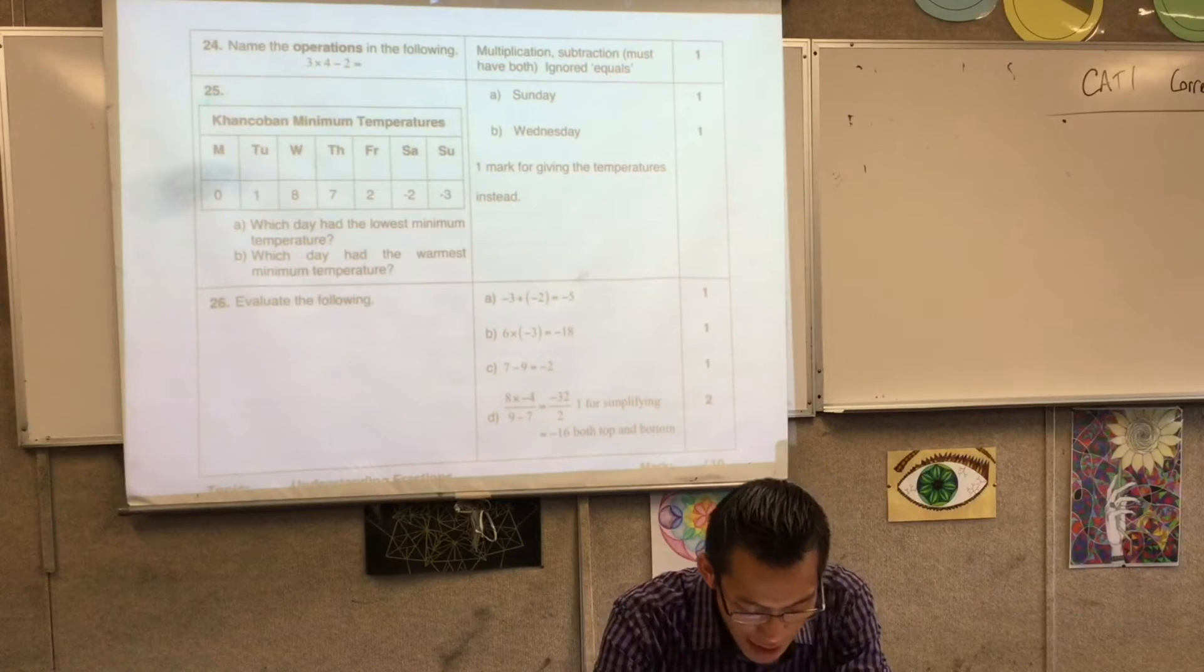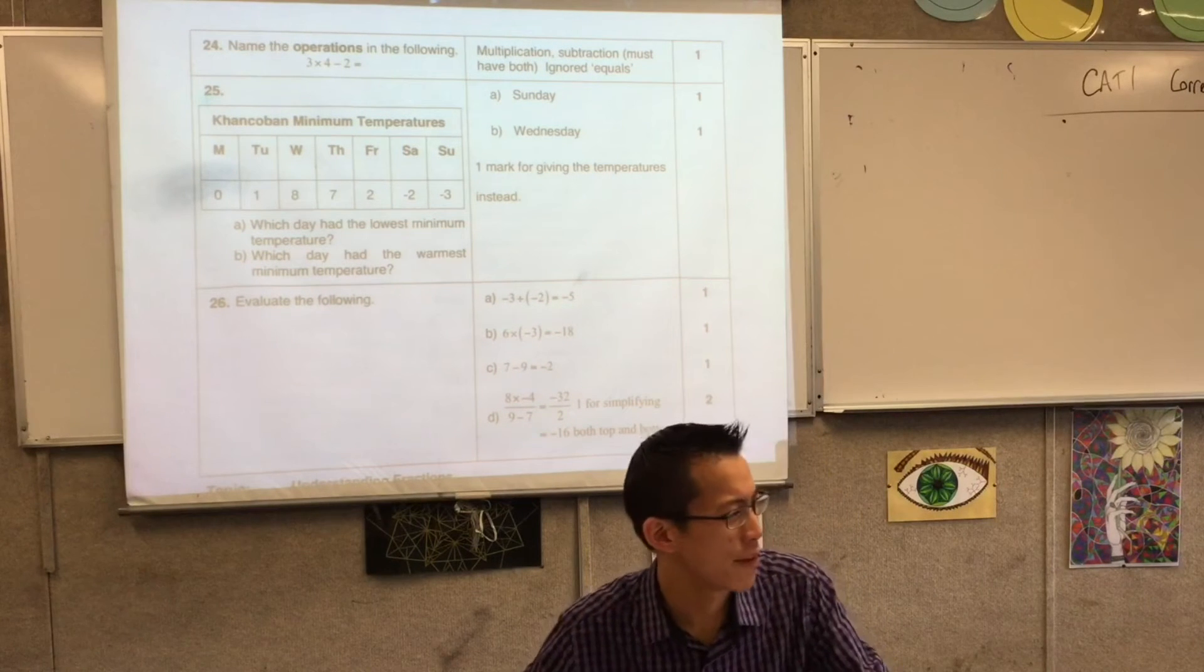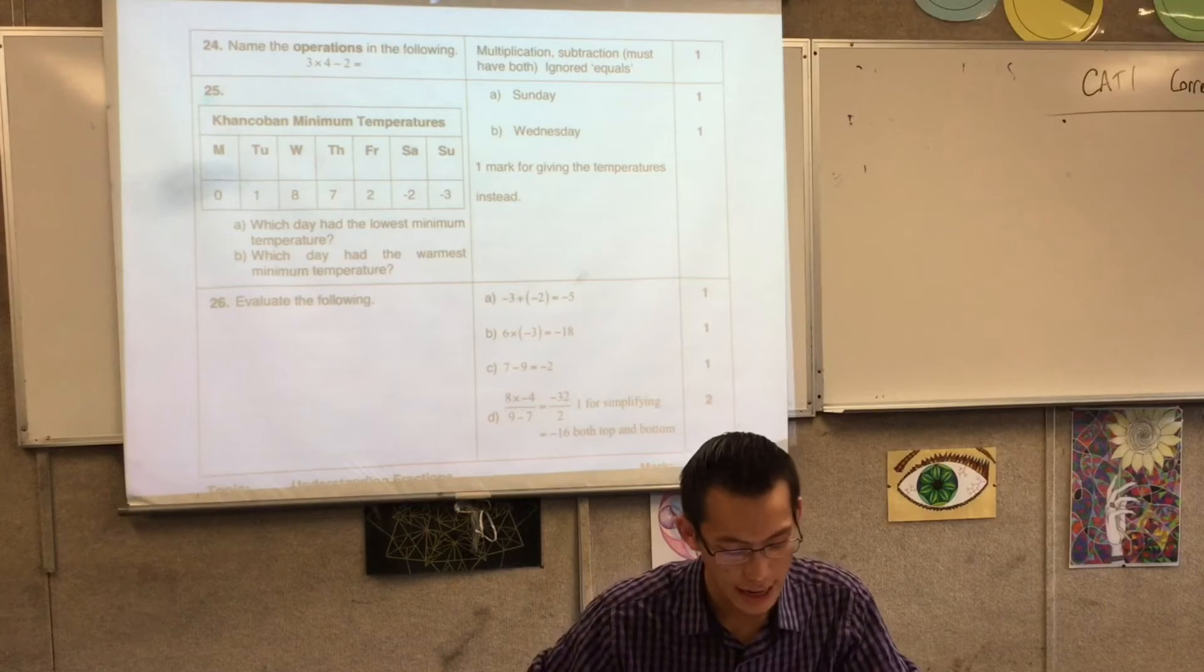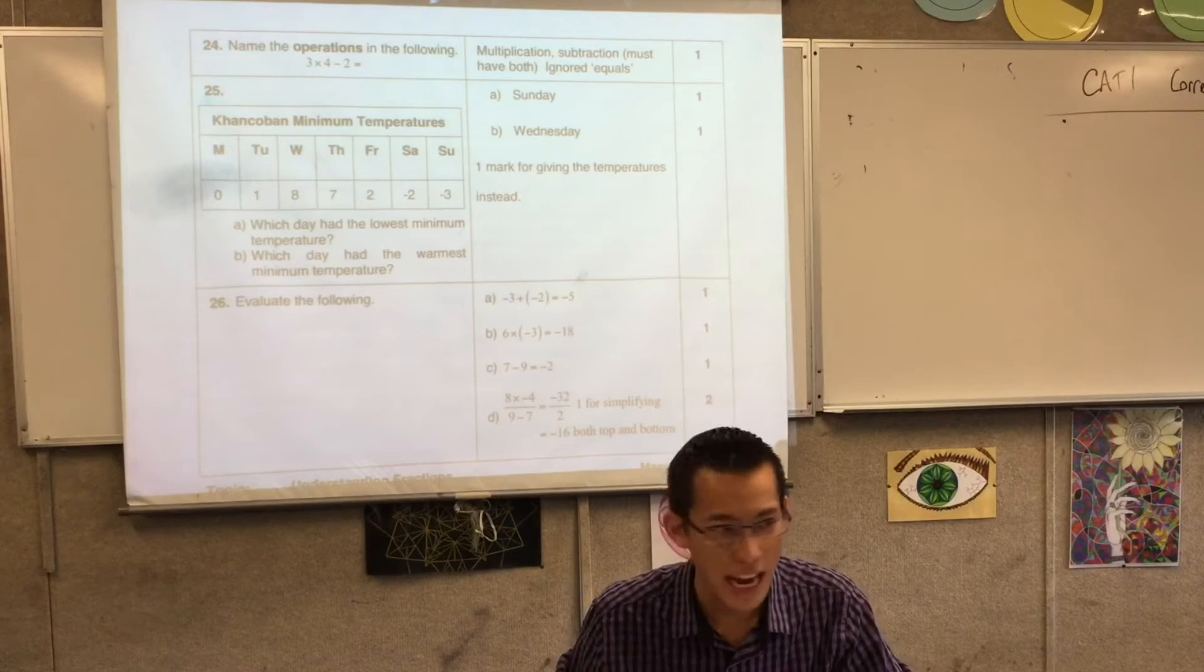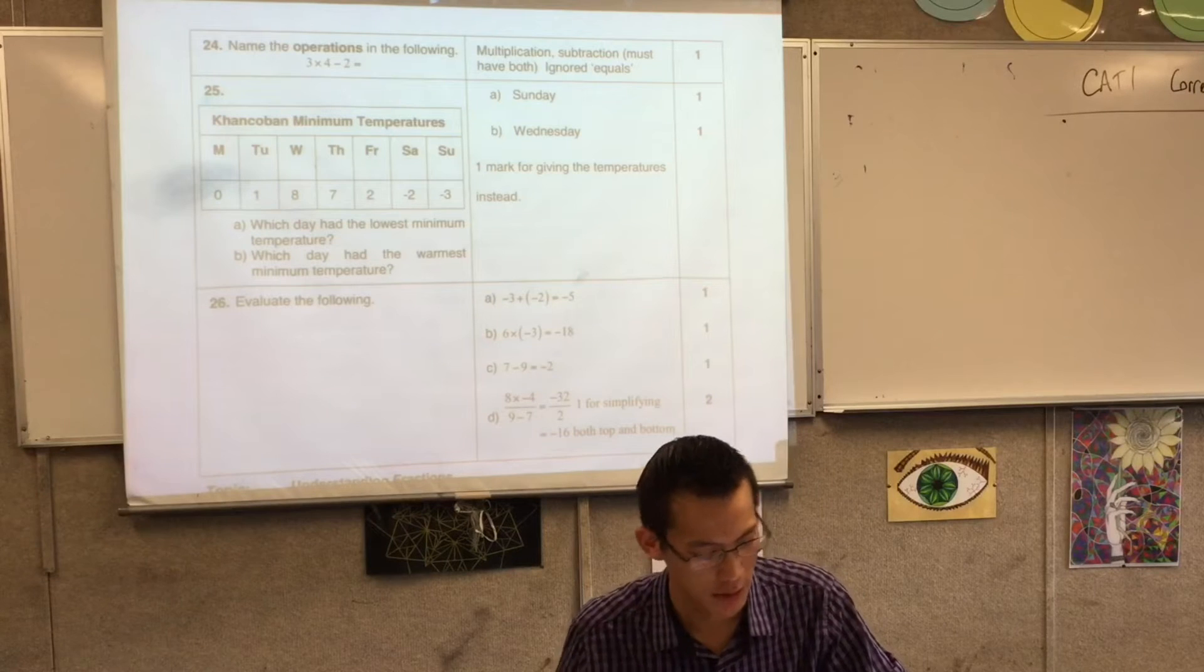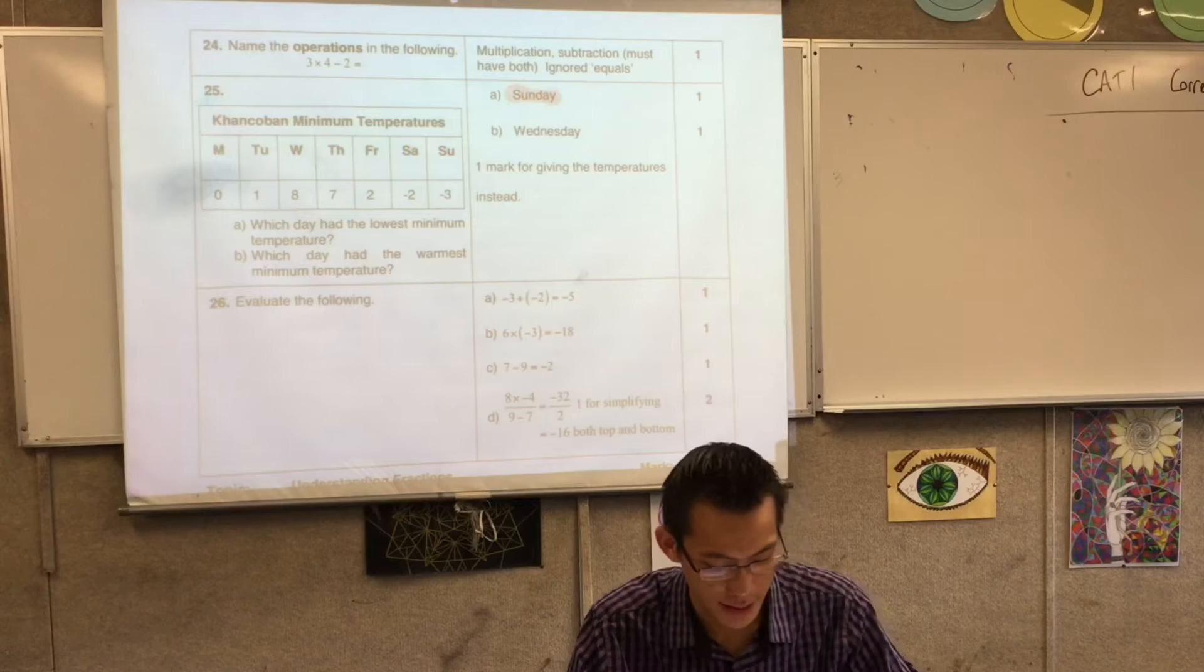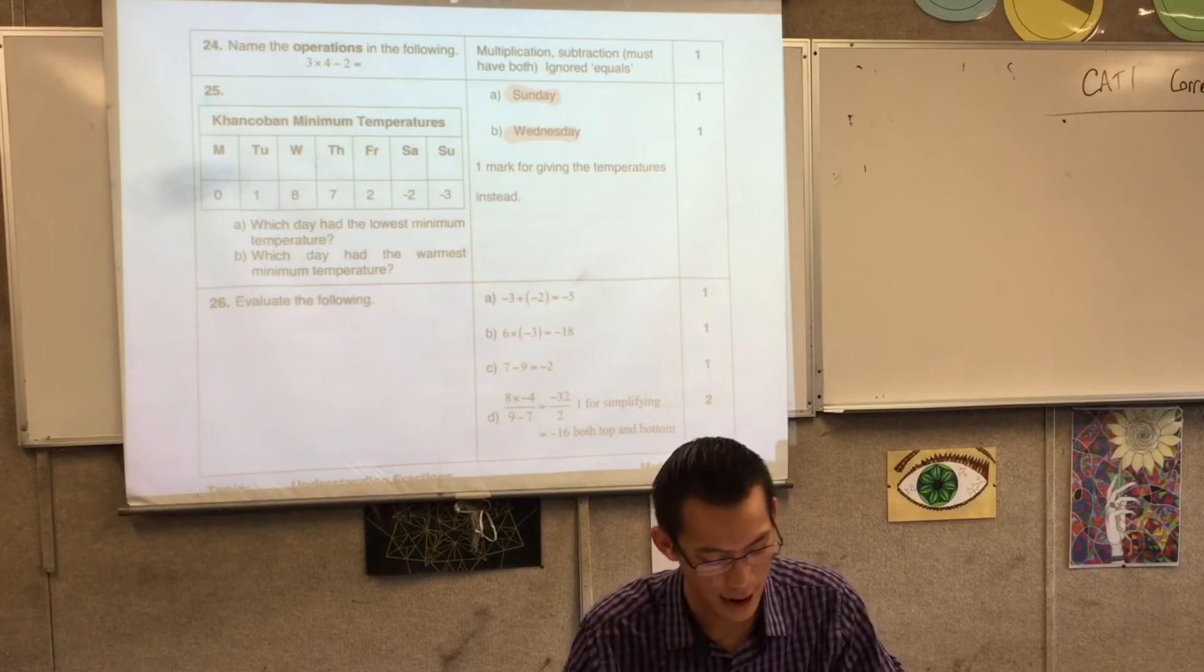Question 25, read the question really carefully. I know lots of us got tripped up on this and it is tricky because you're rushing through. It says which day, not what was the lowest minimum temperature, but which day had the lowest minimum temperature. So that's why we wanted you to answer Sunday, and then Wednesday for part B.